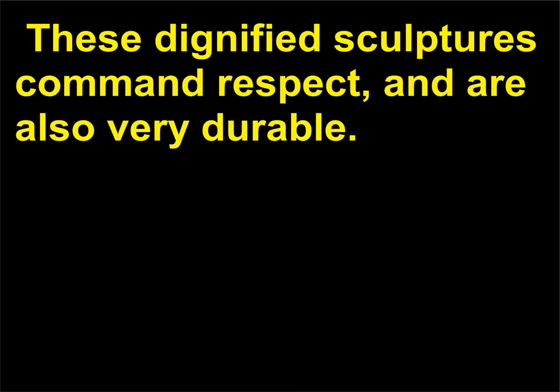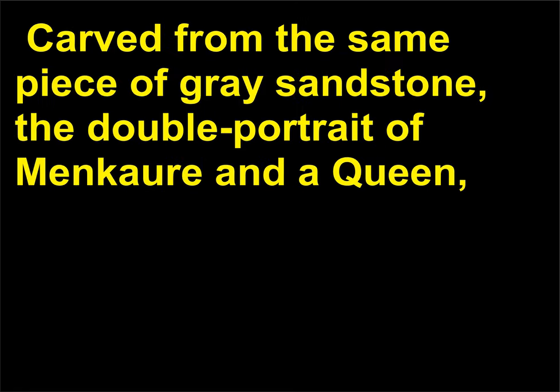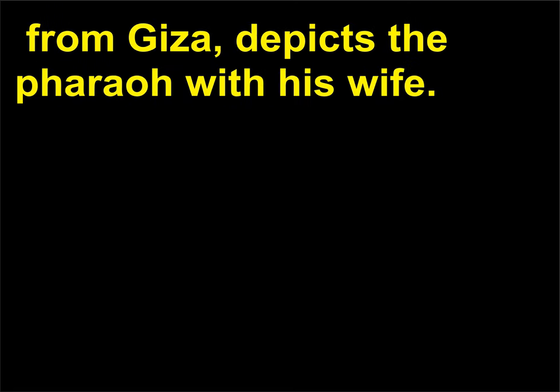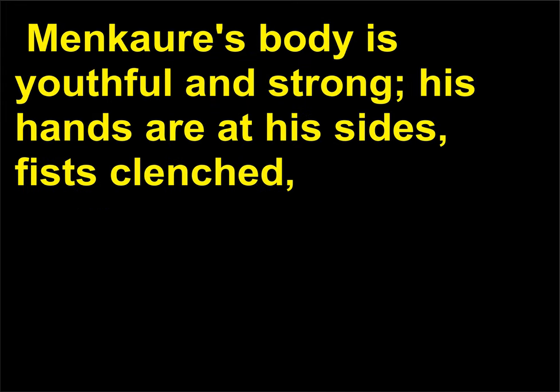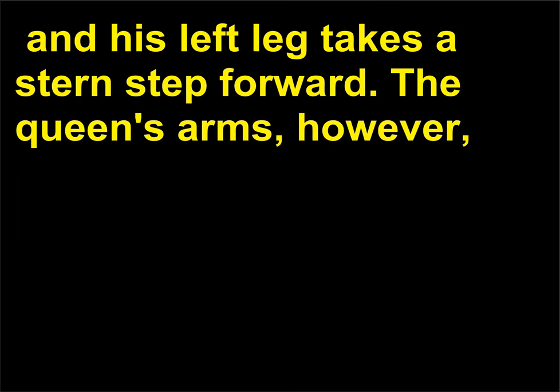These dignified sculptures command respect and are also very durable. Carved from the same piece of gray sandstone, the double portrait of Menkaure and a queen from Giza depicts the pharaoh with his wife. Each figure stands with a rigid, upright posture — Menkaure's body is youthful and strong, his hands at his sides with fists clenched, and his left leg takes a stern step forward.